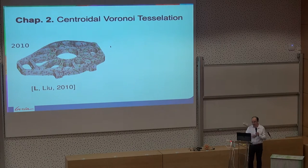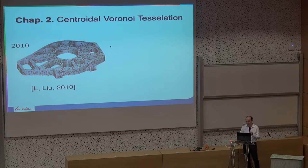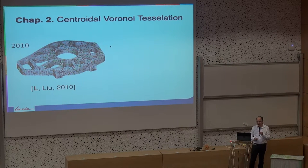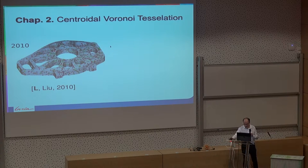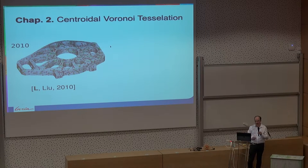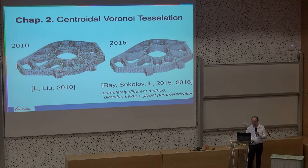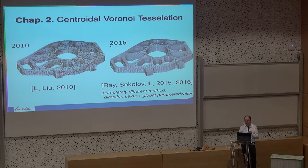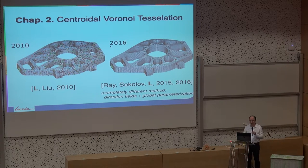Why did I want to develop that? It was for generating hexahedral meshes, which are very good for certain numerical simulations. This was in 2010. But in fact, this is clearly not the best way of doing it. Nicolas Rey from my team and Dmitry Sokolov had a much better idea: computing a global parameterization works much, much better. But that's another story, and I'm not going to talk about that. I will continue to talk about Voronoi diagrams.